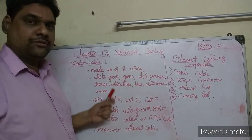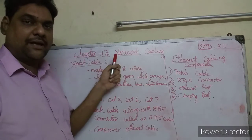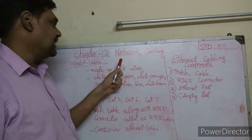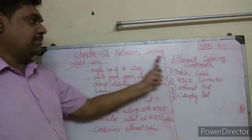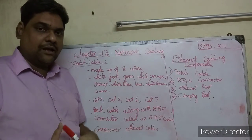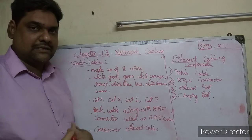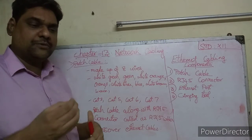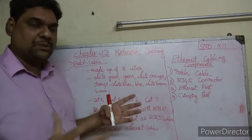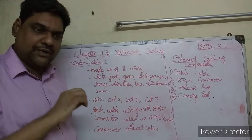Hello children, today let us see the next topic in the third chapter: network cabling. So network cabling - next topic is ethernet cabling components. Ethernet cables, as seen in the last session, are used to connect two computers or two devices in the LAN - local area network.